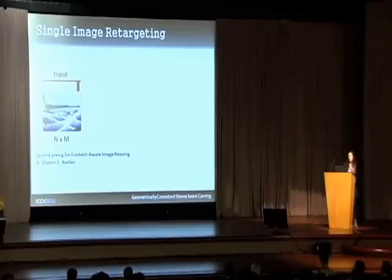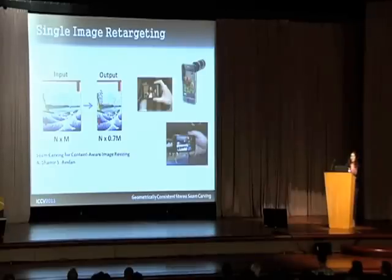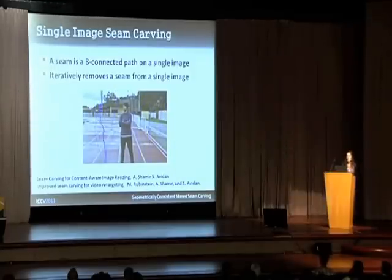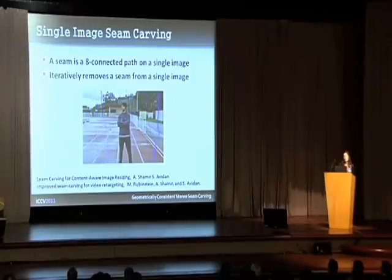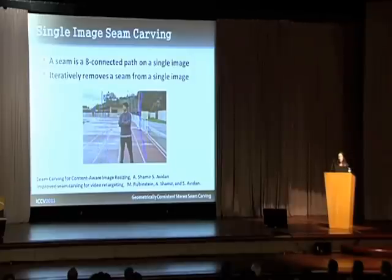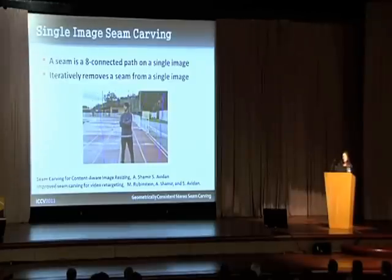The goal of image retargeting is to take an input image and change its aspect ratio while preserving the important features in the image. This way images can be displayed on different devices with different screen sizes. One of the most established methods proven to be efficient is seam carving. A seam is a connected path in the image from left to right or bottom to top, and it works by removing a seam at each step while minimizing the visual distortion.